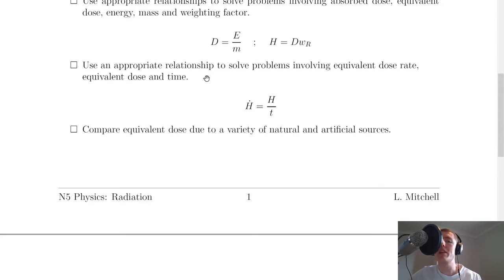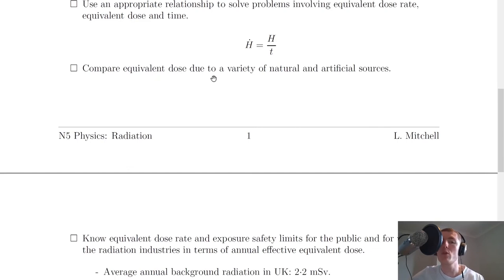Next it says to use an appropriate relationship to solve problems involving equivalent dose rate, equivalent dose and time. We have H dot equals H over T. This one is maybe not as often used as these two equations but you still need to be able to know how to apply it to questions. Next it says to compare equivalent dose due to a variety of natural and artificial sources.